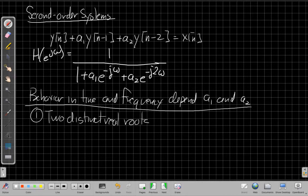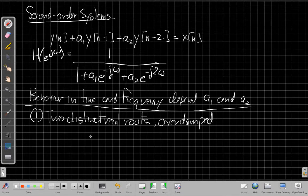Right, so when I do the factoring, I can factor it into two real values that are not equal to each other. And this is sometimes called overdamped. We'll see when we look at the time domain behavior why that is.